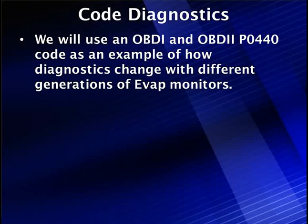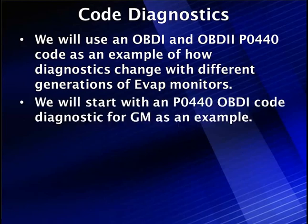Let's talk about our introduction to code diagnostics. We're going to use an OBD-1 and an OBD-2 code for P0440. It's an example of how the diagnostics changed slightly with EVAP monitors and different generations of EVAP. We'll start with this 440 OBD-1 code of a GM example.